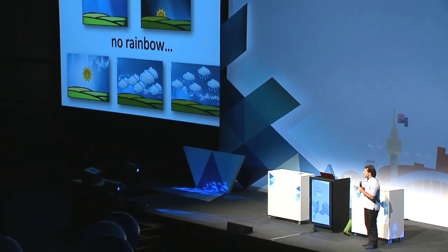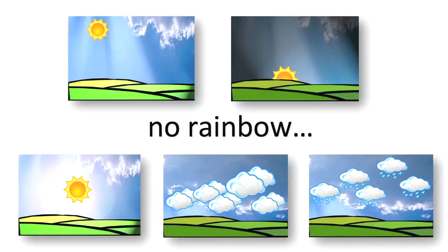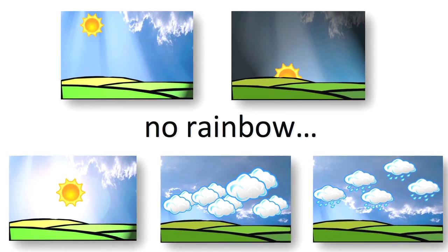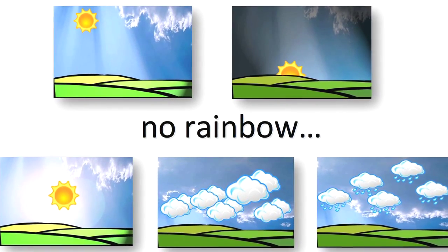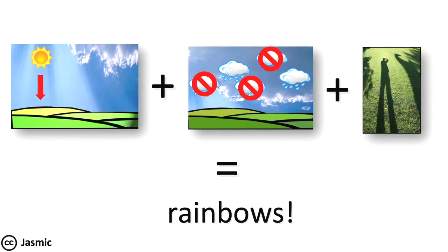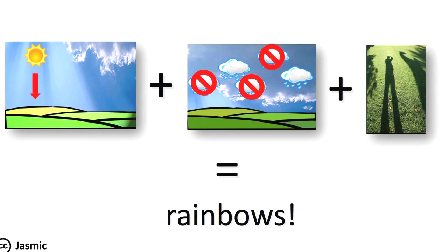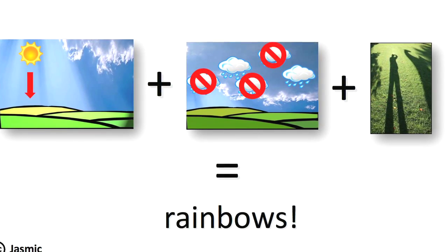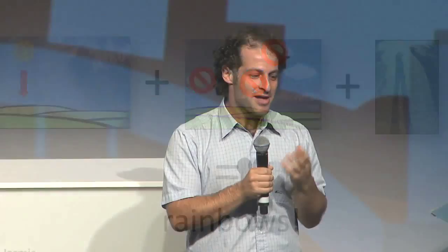It's actually much easier to describe when you can't see a rainbow than when you can. If the sun is too high — more than 42 degrees — you'll never see a rainbow. Same thing if the sun has set, if it's a fully sunny day, a cloudy day, or if the sky is covered with rain clouds or snow. But to actually see a rainbow, we need the sun to be relatively low — less than 42 degrees — we need rain to be in front of us, and we need the sun to be directly behind us. So if you have the sun directly behind you and rain clouds in front of you, those are the perfect conditions for seeing a rainbow.